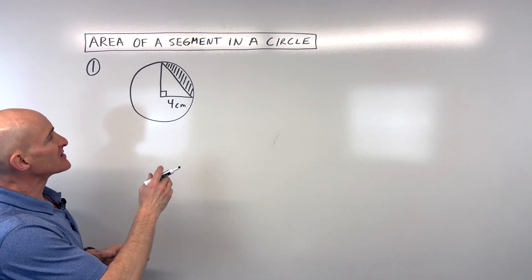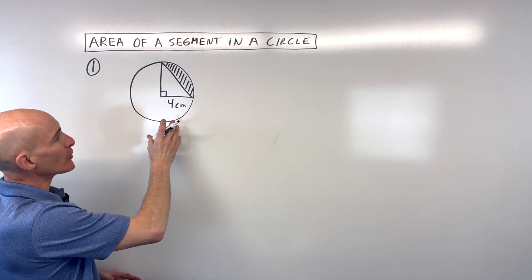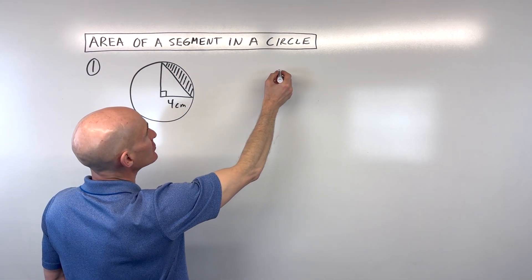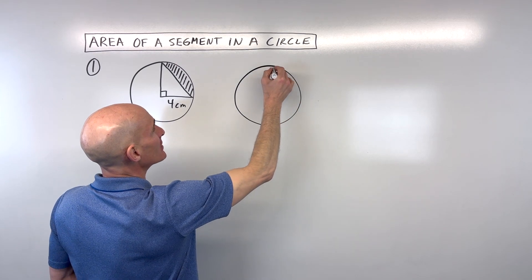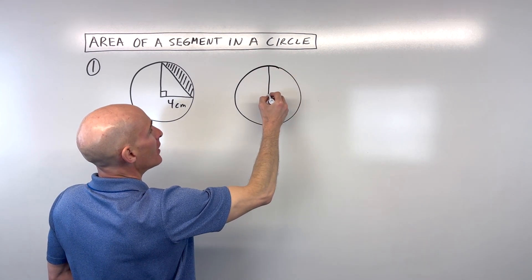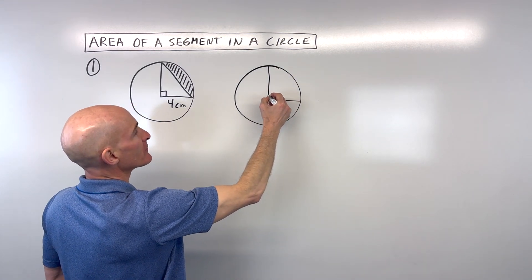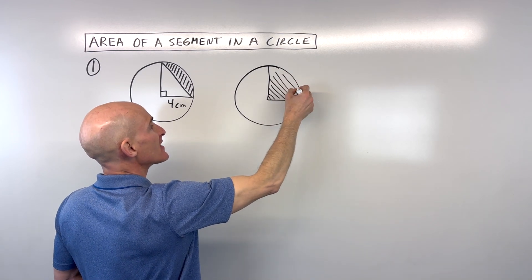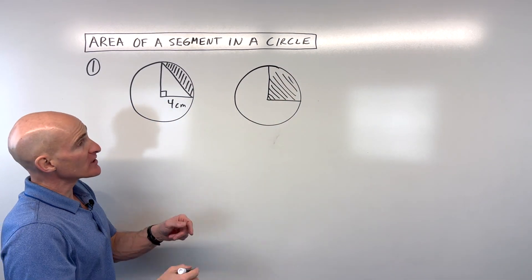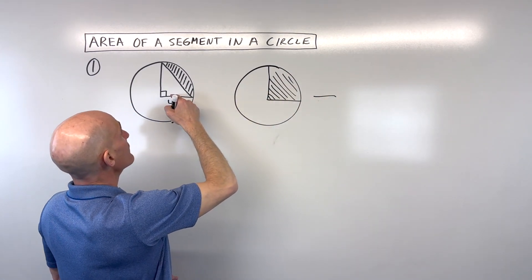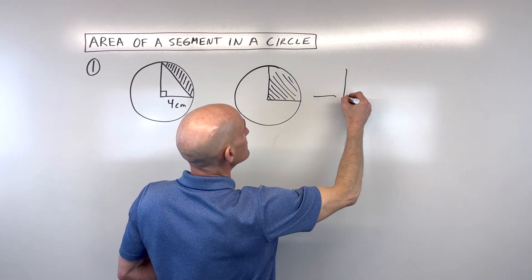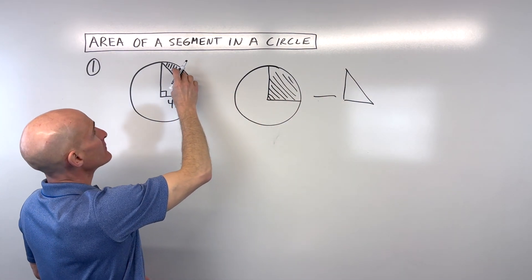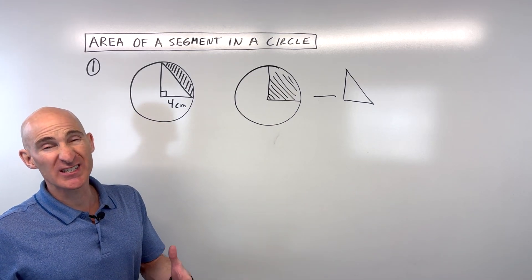The first example is a little bit simpler. We're going to focus on finding the area of the sector — a sector is like a section of the circle, like a pie slice. So we're going to find the area of this pie slice, then we're going to subtract off this triangular area, and that's going to leave this region that we want, which is called the segment.